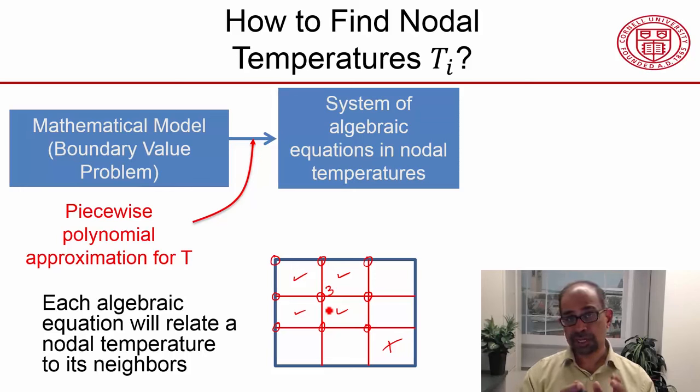We also know that there's going to be a constant term that comes from heat generation. In this case, we don't have heat generation, so the algebraic equation at this node won't contain any constant term.